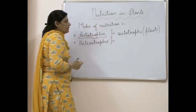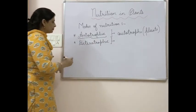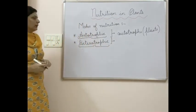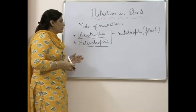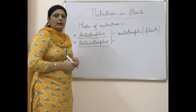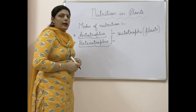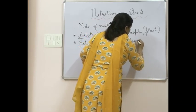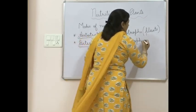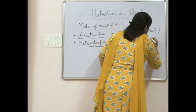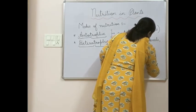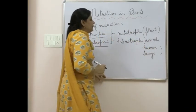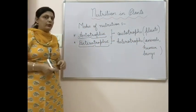We will do the details of heterotrophic mode later in the chapter; this is just a brief overview. 'Hetero' means other and 'tropic' means to synthesize. Organisms which are not able to synthesize their own food but depend on other organisms for food are called heterotrophs and they adopt the heterotrophic mode of nutrition. Animals come in this category, and human beings, being social animals, also show heterotrophic mode of nutrition.